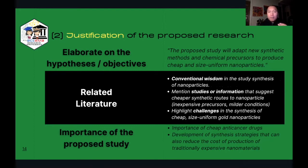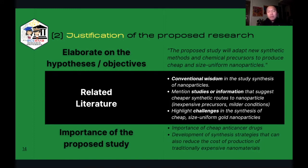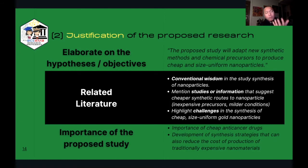We start the justification by elaborating on the hypothesis or objective: the proposed study will adapt new synthetic methods and chemical precursors to produce cheap and uniform nanoparticles. You follow it up by stating the conventional wisdom when it comes to the synthesis of nanoparticles — is it usually expensive, how many protocols produce nanoparticles cheaply? You should also cite studies that suggest that cheaper synthetic routes can be adapted, such as a cheap synthetic route for making silver nanoparticles that could be adapted for making gold nanoparticles.